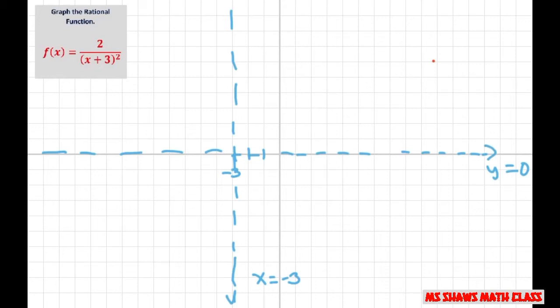Now we're going to plot a few points, knowing there's some symmetry here. This square is going to make a difference. Let's plug in negative two. I want to see what's going on the right side of negative three. If I plug in negative two, I get two, and this is going to be negative two plus three is one squared. That's two. So negative two gets mapped to two.